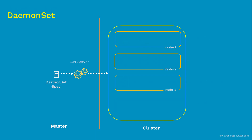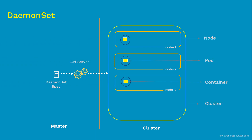The solution is DaemonSet. DaemonSet ensures that all or some nodes inside the cluster run a copy of a pod. In this animation, we have four worker nodes inside the Kubernetes cluster. Our requirement is deploying one monitoring app instance per node. DaemonSet is the right controller for this job — it will deploy one pod per node. Once we submit the DaemonSet manifest file to the API server, only one pod is scheduled on each node.